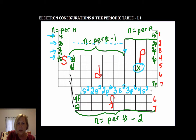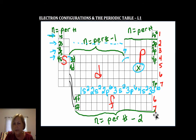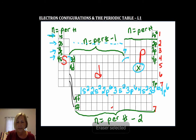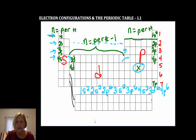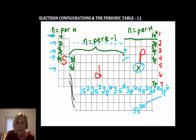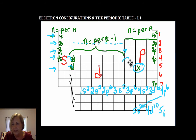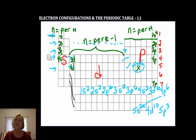When you get to the D block it's kind of like going down a hill — 3d — and you count 1 2 3 4 5 6 7 8 9 10, so 3d10. Now you go back up the hill, all the way to 4d10. And now we're at the 5p block, but we don't fill it up — we only go three steps — 5p3. That's how we do it: literally just taking walks through the periodic table.